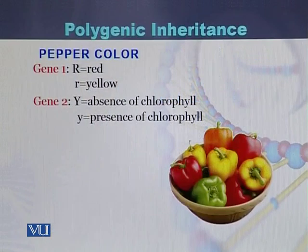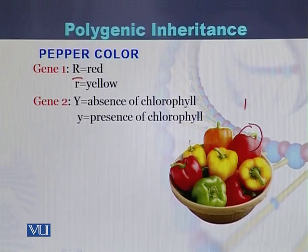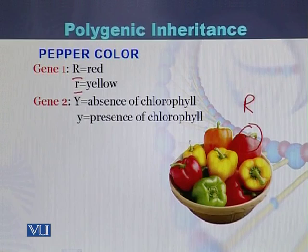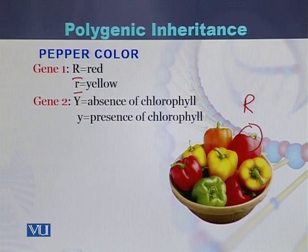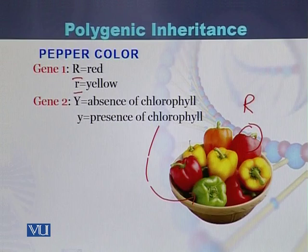Here is an example in pepper color. There are two genes which control the pepper color. Gene 1 can exist in dominant form — if there is a dominant allele, then the color of the pepper will be red. If there is a recessive allele of the same gene, then the color of the pepper would be yellow. There is a second gene: if that gene is in dominant form (Y allele), it means there is an absence of chlorophyll, while if the second allele is in recessive form, chlorophyll will appear in the pepper. So the green color of the pepper is due to the recessive nature of gene 2. There are two different genes which control the pepper color.